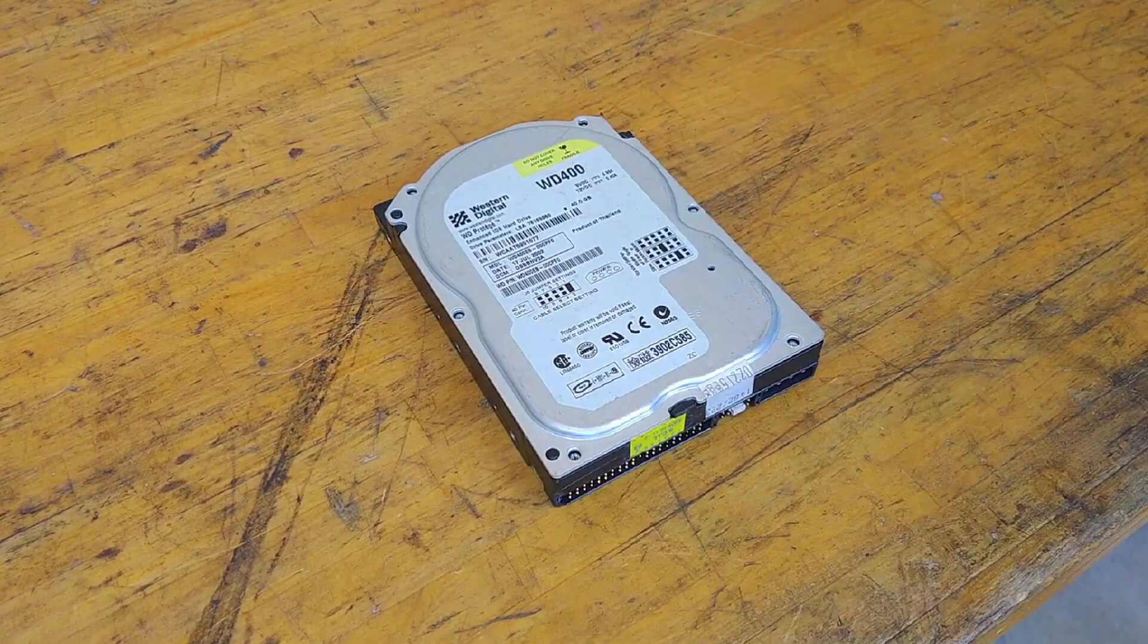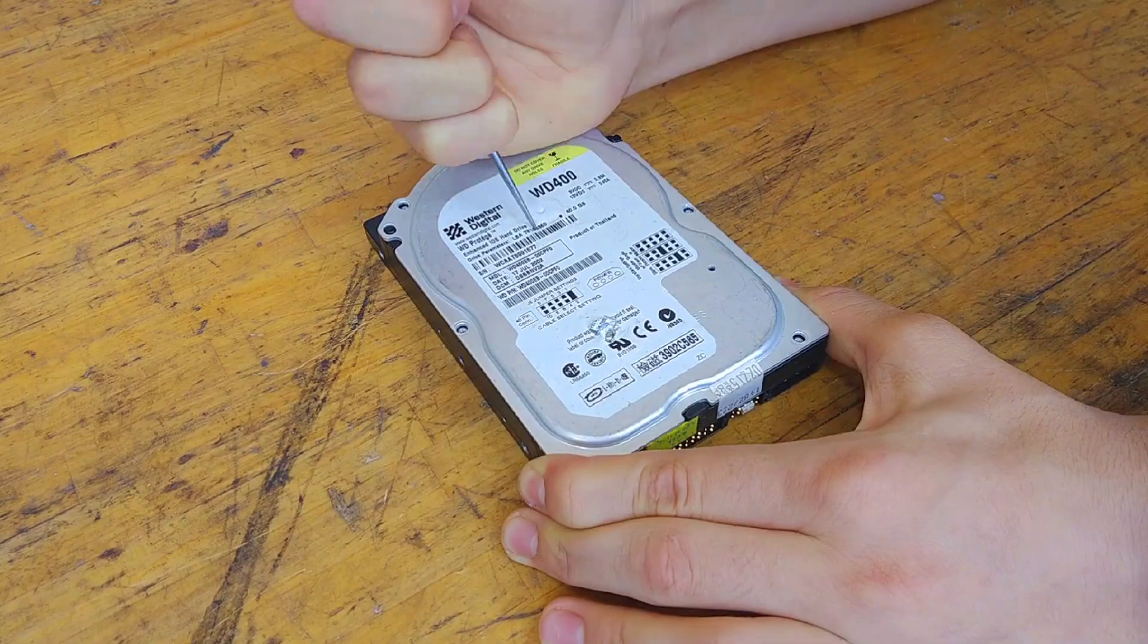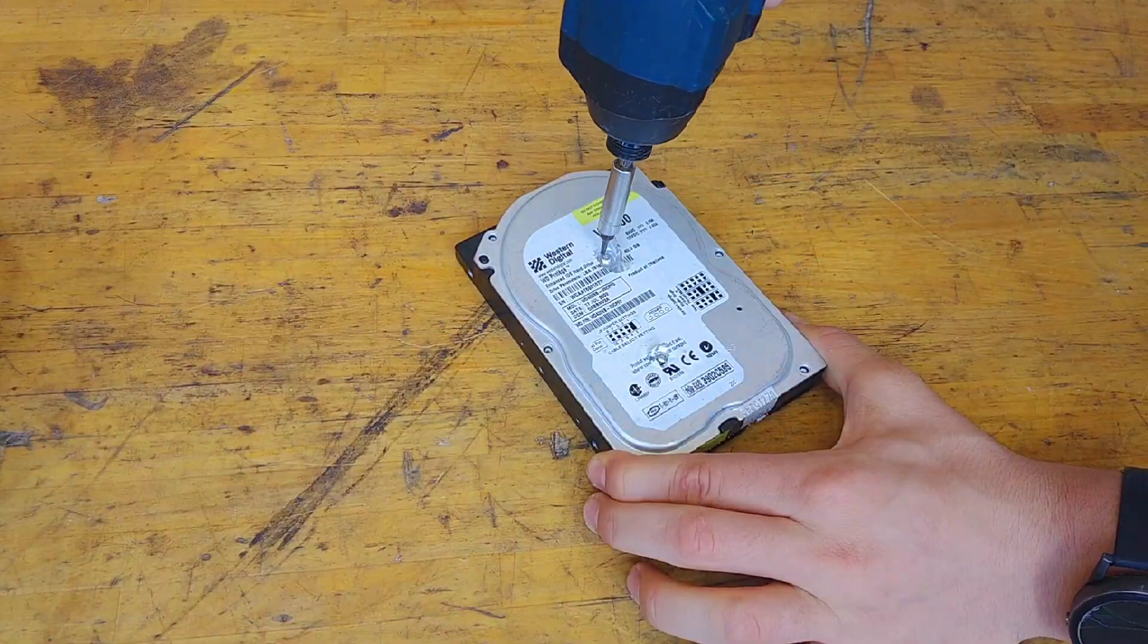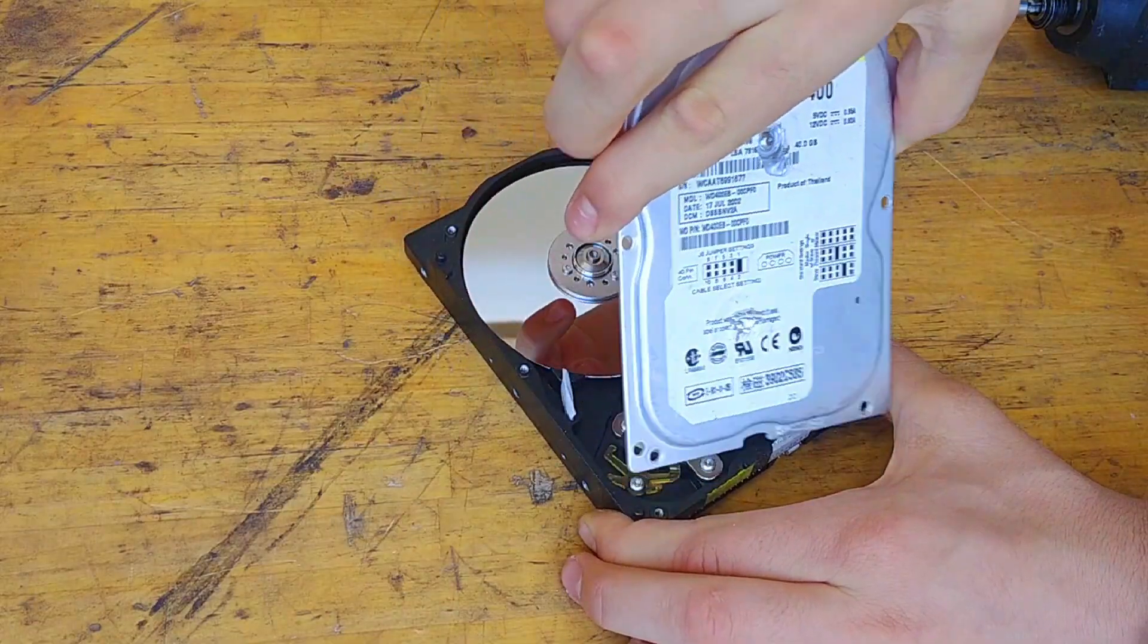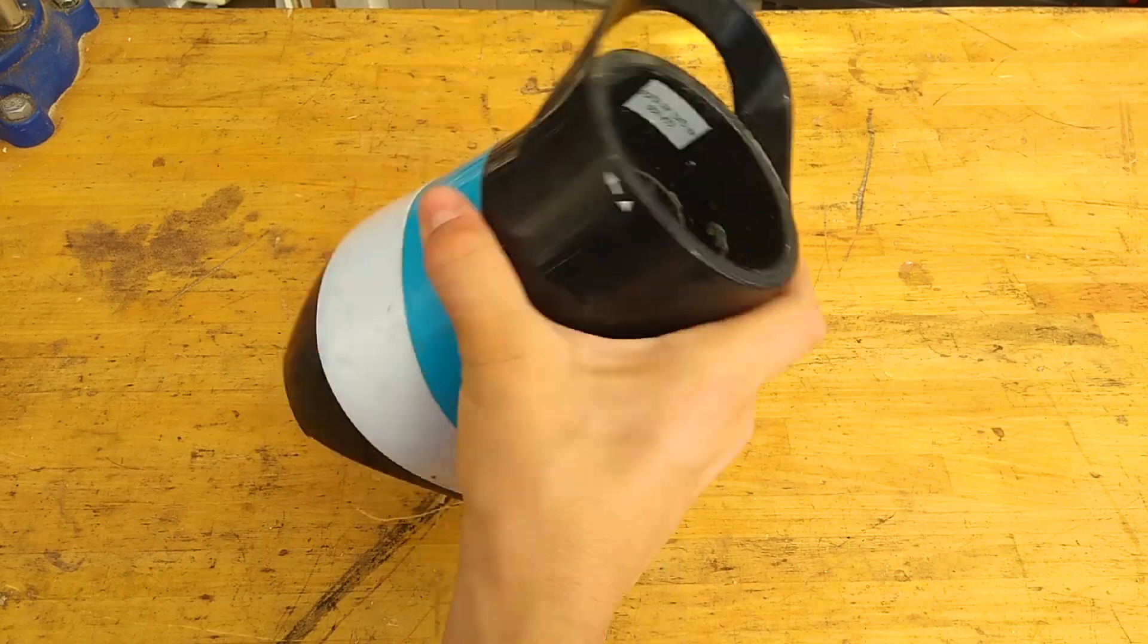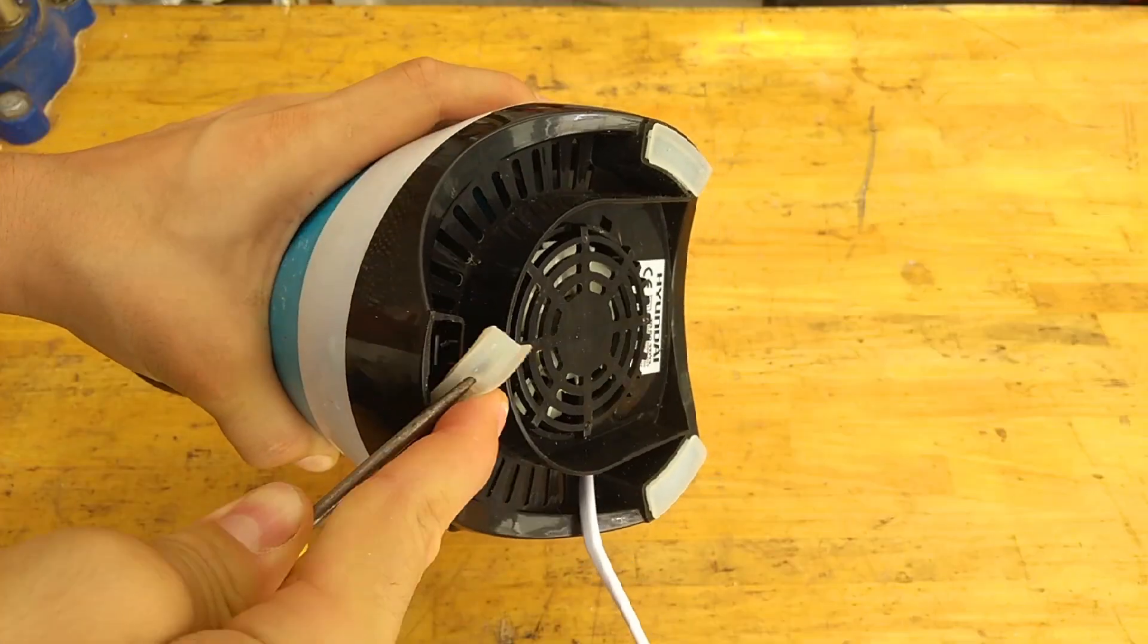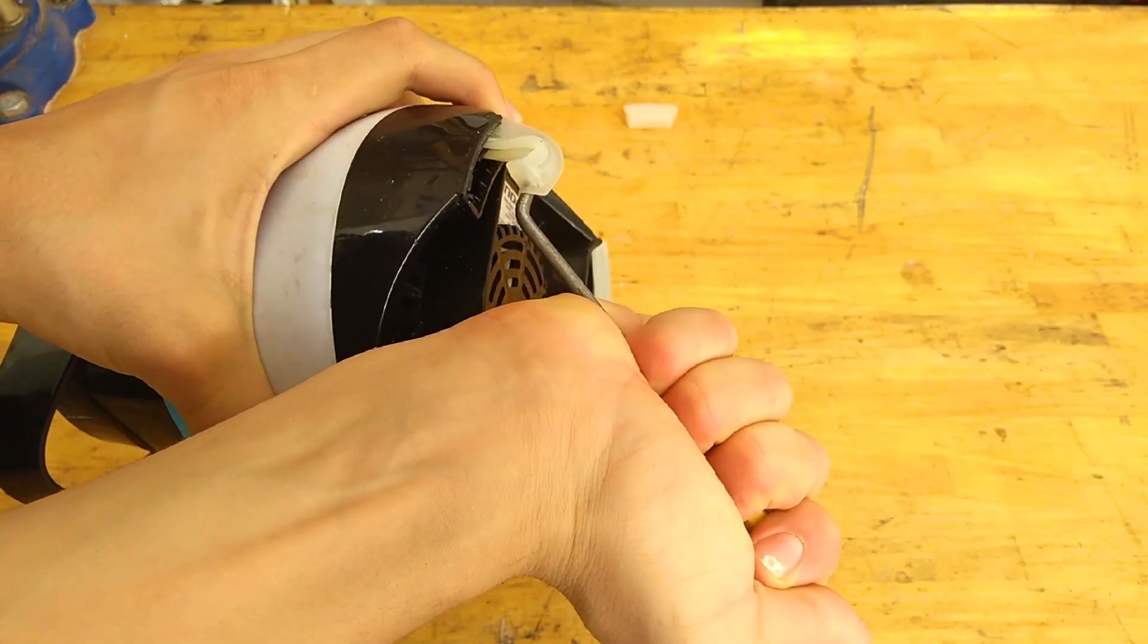Hard drives typically have a hidden screw or two to dissuade disassembly. I use an ice pick to locate them. I take these apart for their strong neodymium magnets. Many electronic devices also have rubber feet or pads that conceal the screws holding them together.